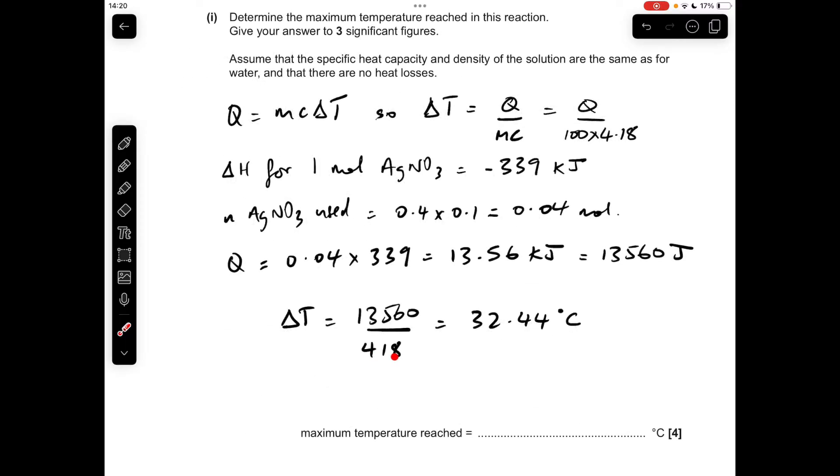When we divide those joules by the MC, so 100 times 4.18, we get 32.44 degrees C. Remember that's the temperature change, so we need to add 20 degrees onto that to get the maximum temperature reached, and just be careful you make sure you give your final answer to three significant figures.